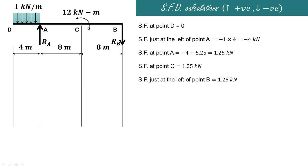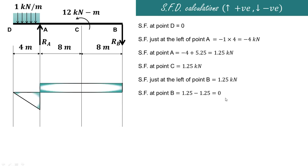There is no load between C and B, so the shear force at just left of B is also 1.25 kilonewtons. Exactly at point B, the downward reaction RB of 1.25 is applied, so 1.25 minus 1.25 equals 0. The shear force diagram shows: 0 at D, minus 4 just left of A, then 1.25 from A through C up to just left of B, and 0 exactly at B.